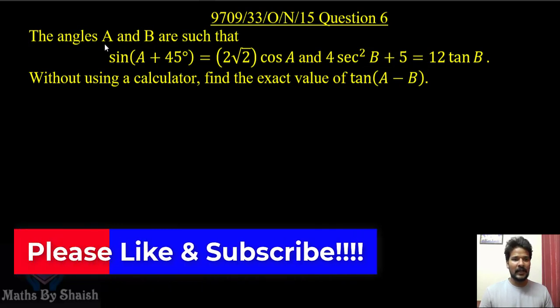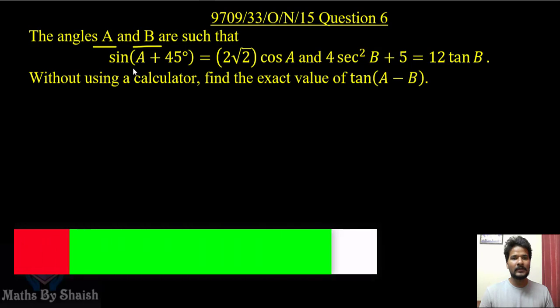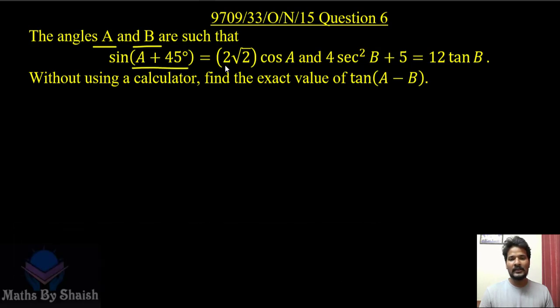The question is: the angles A and B are such that sin(A + 45°) = 2√2 cos A and 4 sec²B + 5 = 12 tan B. Without using a calculator, we need to find the exact value of tan(A - B).